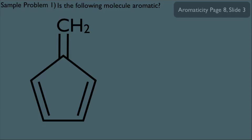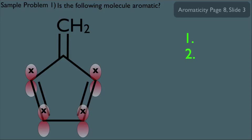Is the following molecule aromatic? Let's put it through the two criteria. If we want to make sense of the pi bond in the lower left, there must be two p orbitals sideways overlapping. And to explain the other pi bond, notice this carbon here is a doubly bonded carbon, so it would be sp2 hybridized, which means this carbon does have an unhybridized p orbital.